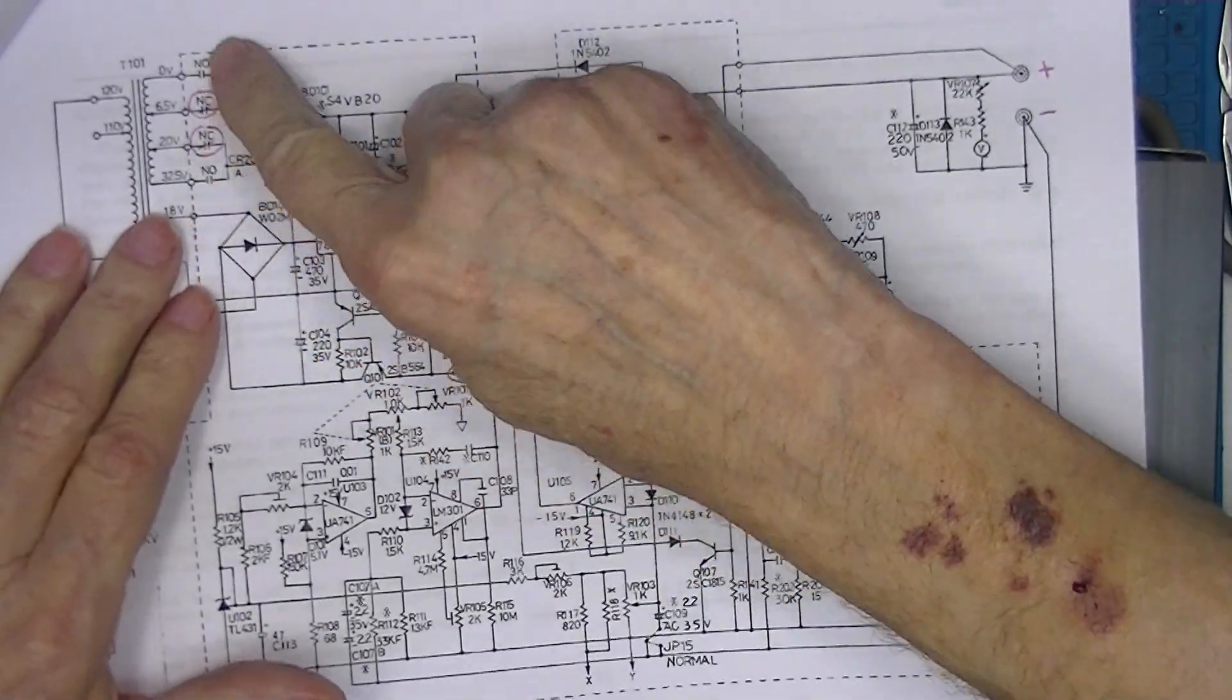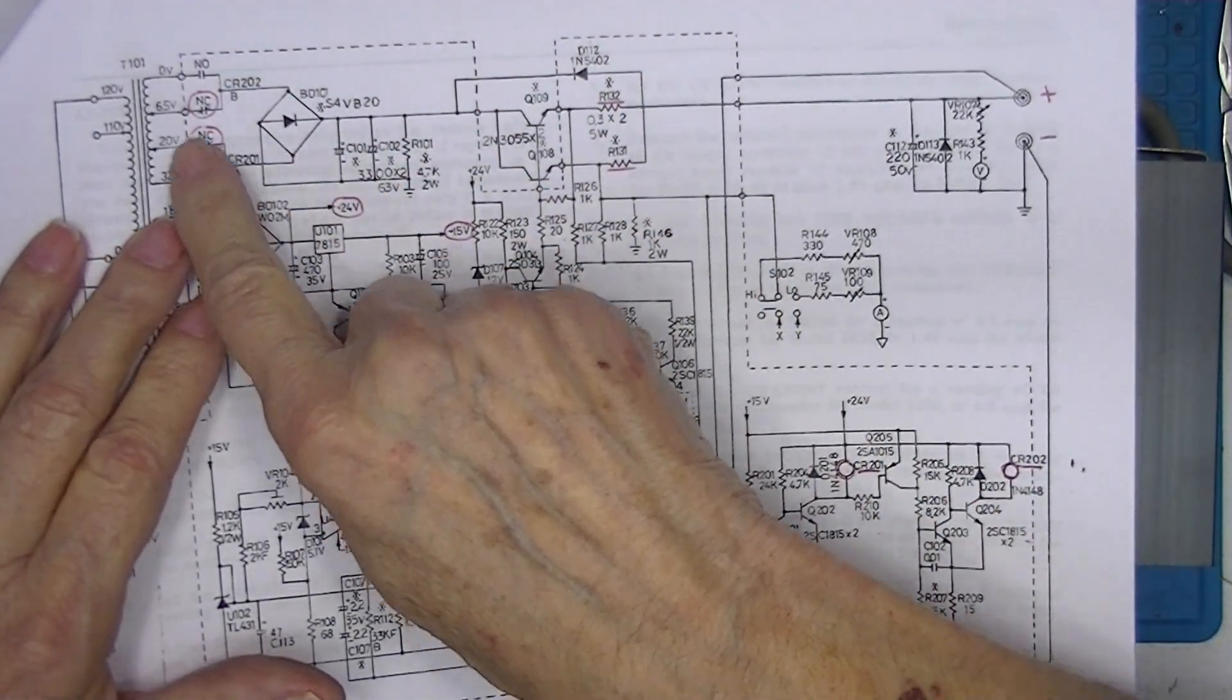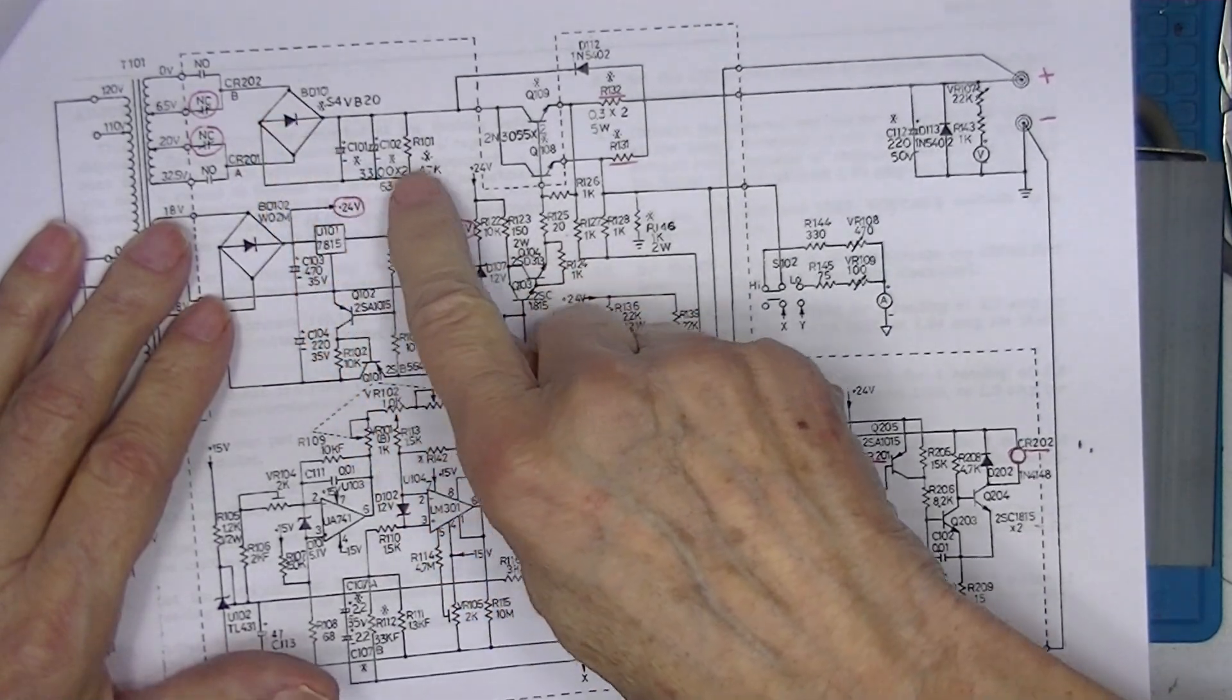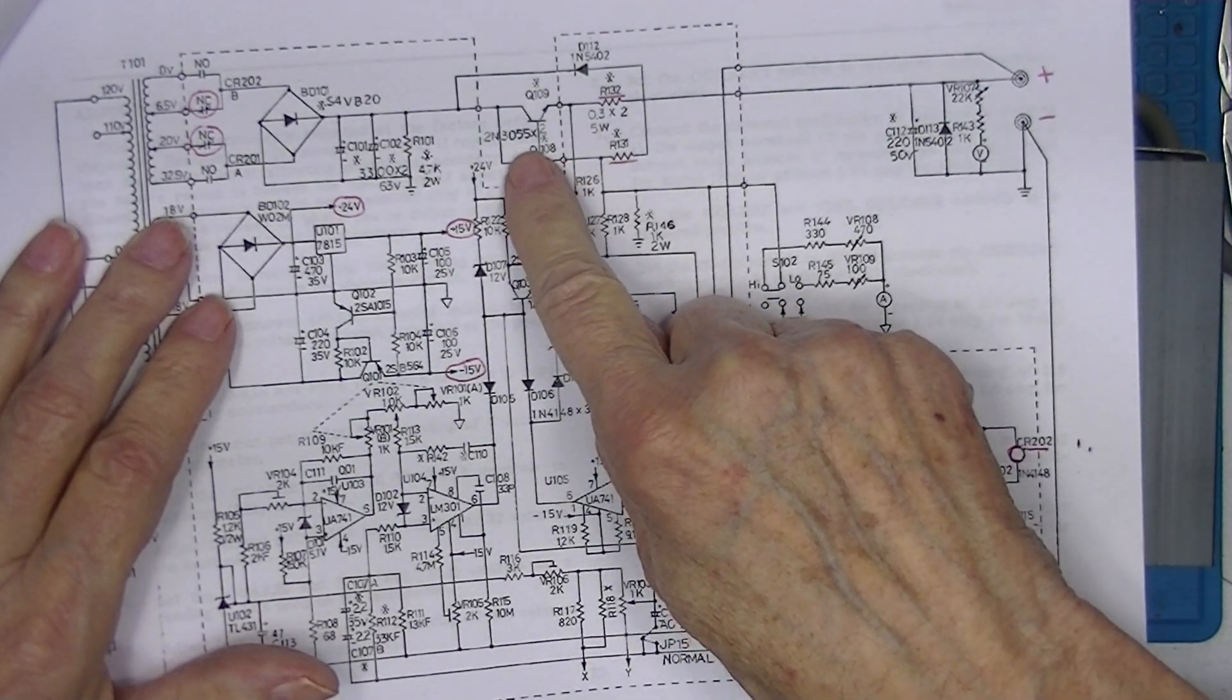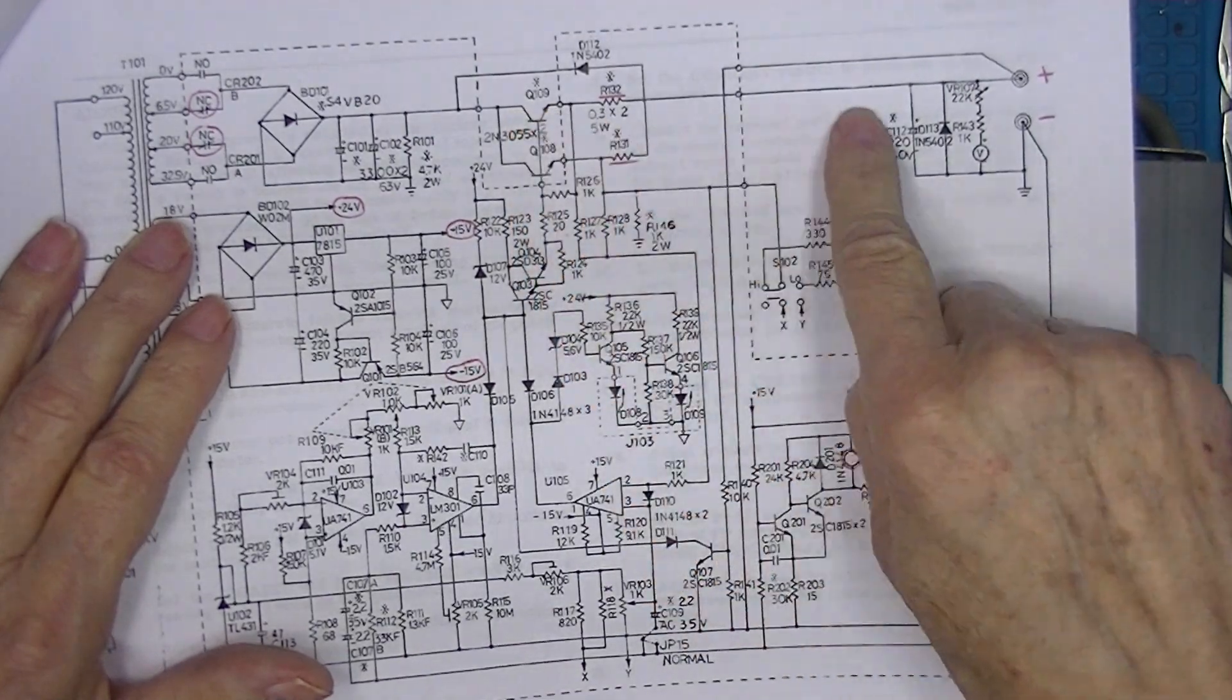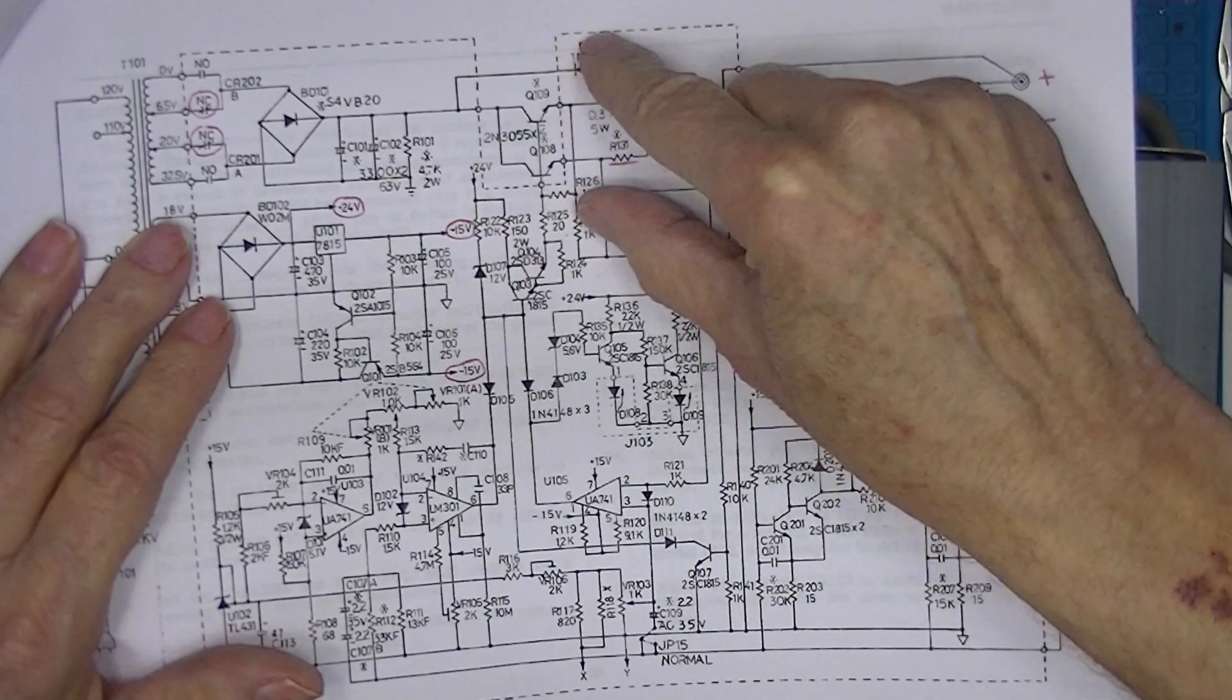Next we have the power winding. This winding supplies the bridge rectifier, filter capacitors, a couple of paralleled 2N3055 pass transistors, and the output. So this is the power circuitry.